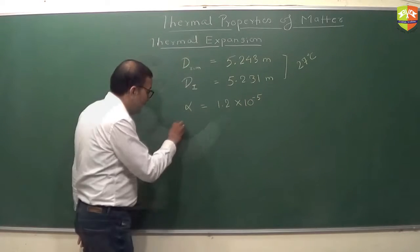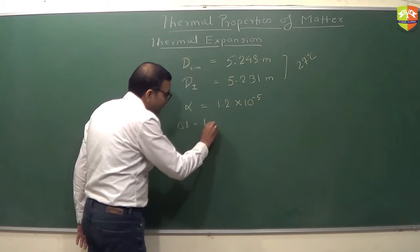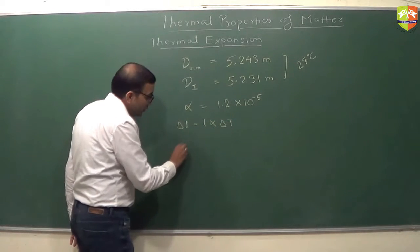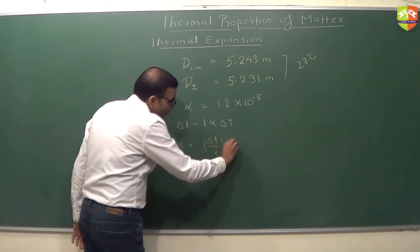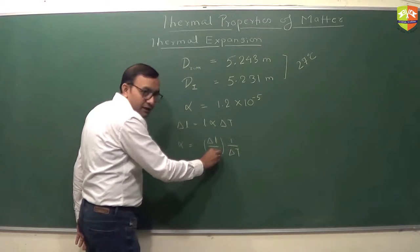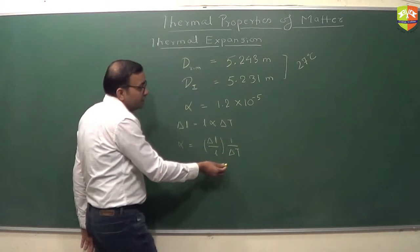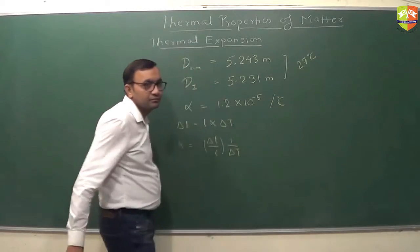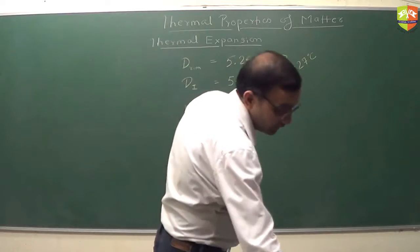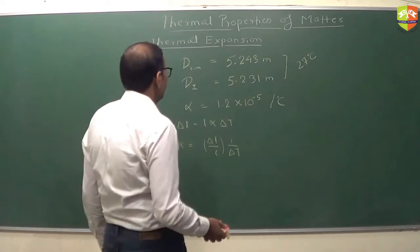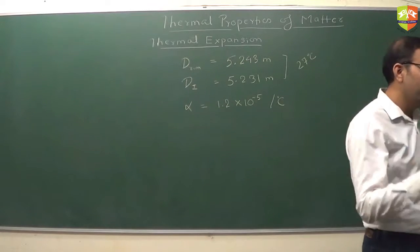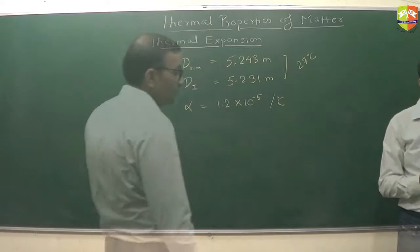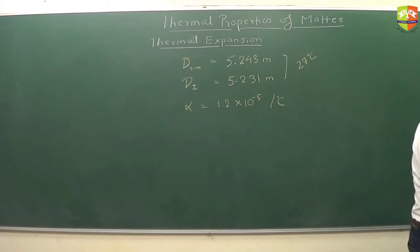You need to find out what temperature should the ring be heated so that it fits on the wooden ring. The coefficient of linear expansion for iron alpha is given as 1.2 into 10 to the power minus 5. What do you think the unit should be? Look at it. Delta L equals L alpha delta T. So alpha is delta L by L into 1 by delta T. So meter meter cancels per degree Celsius. So this is per degree Celsius. Get the value of temperature up to which the iron ring should be heated so that it gets fitted into the wooden ring.